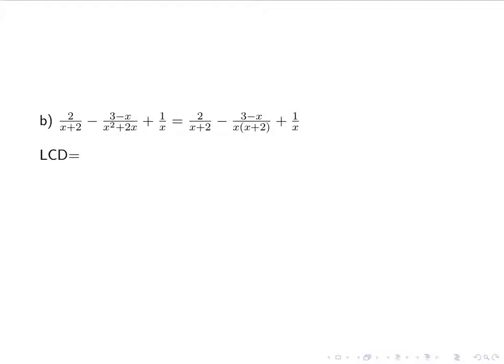My LCD is, I have a factor of x plus 2 and I have a factor of x. So my LCD is x times x plus 2. The highest exponent I see any of those raised to is a 1. So it is what it is.